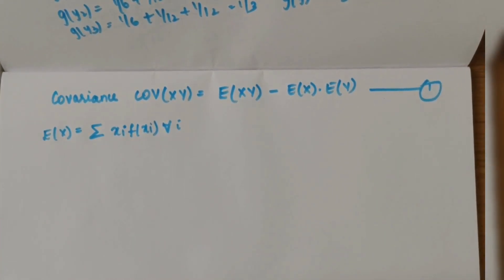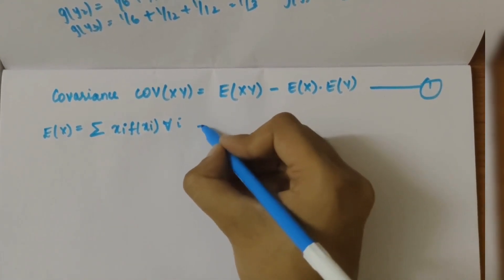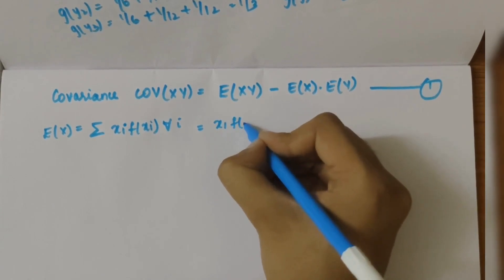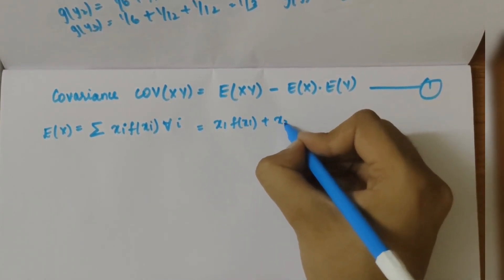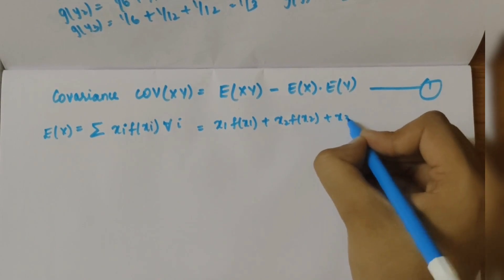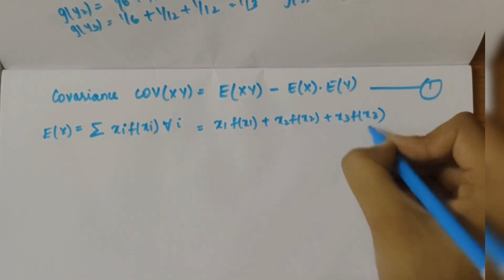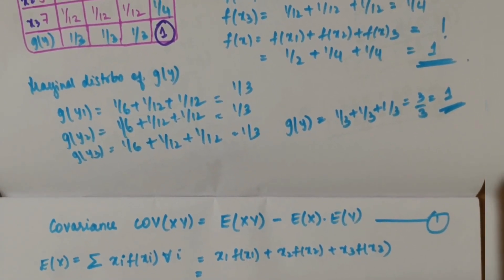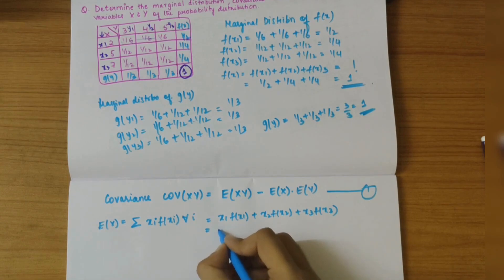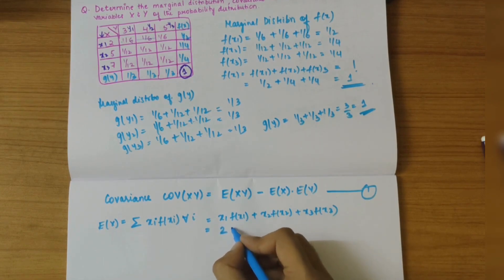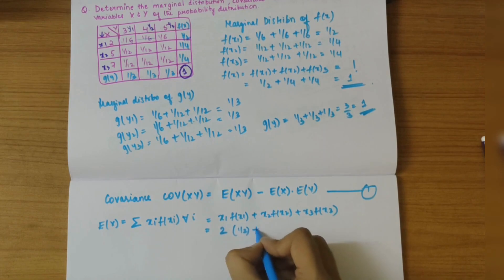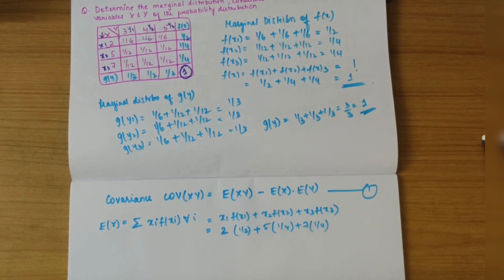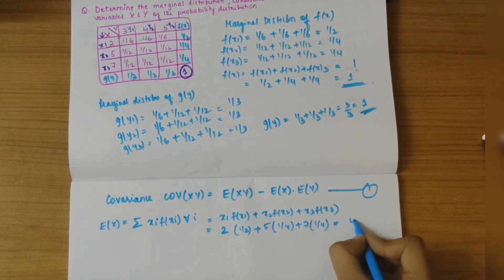E(x) can be written as x1·f(x1) + x2·f(x2) + x3·f(x3). Substituting the values: x1 = 2, f(x1) = 1/2; x2 = 5, f(x2) = 1/4; x3 = 7, f(x3) = 1/4. So E(x) = 2·(1/2) + 5·(1/4) + 7·(1/4) = 4.